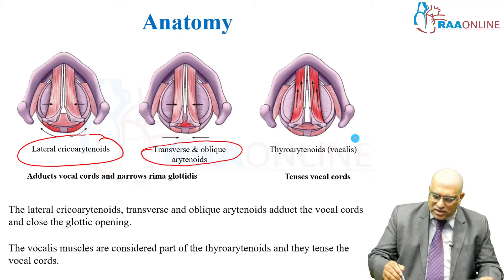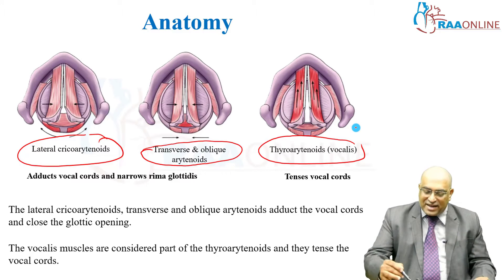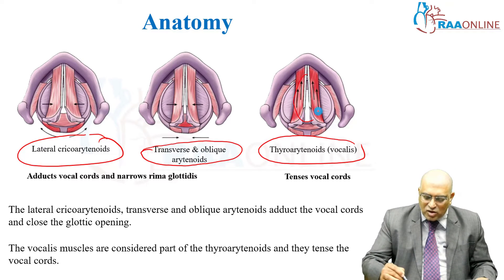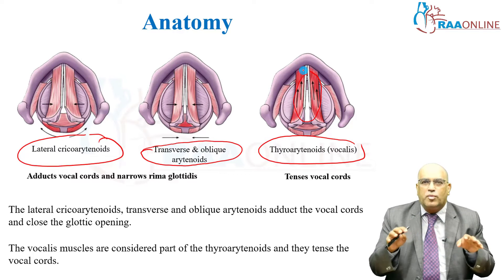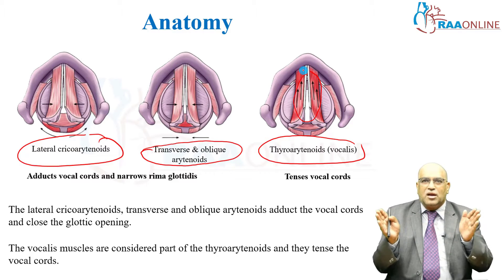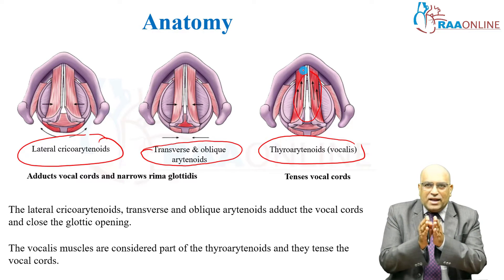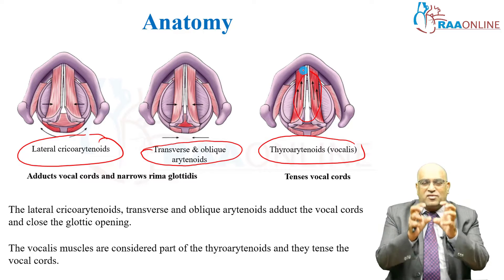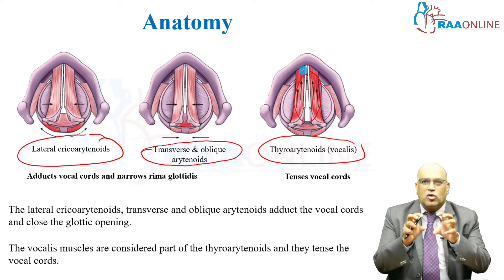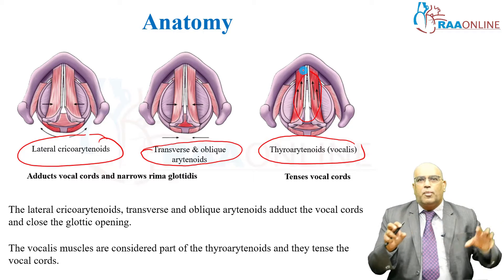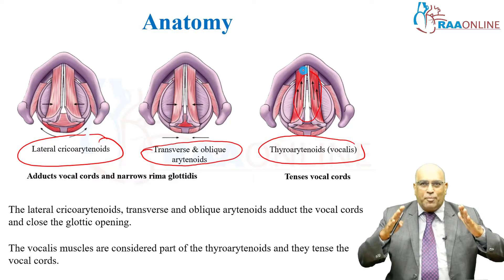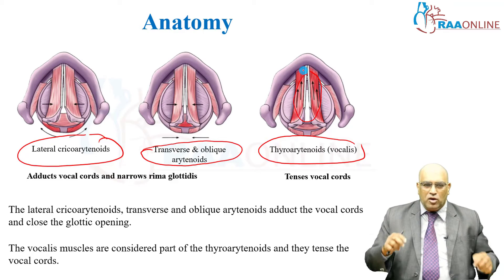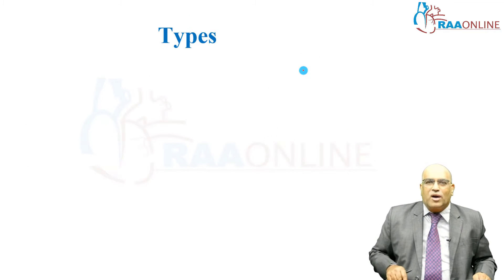One more muscle, the thyroarytenoid vocalis, tenses the vocal cord. So these four muscles basically adduct the vocal cord as well as tense the vocal cord. The posterior cricoarytenoid, however, is an abductor of the vocal cord.